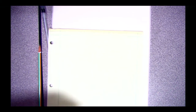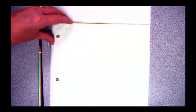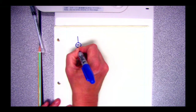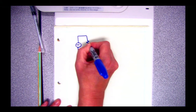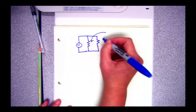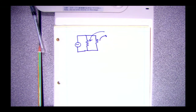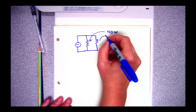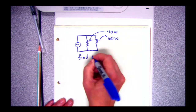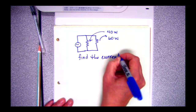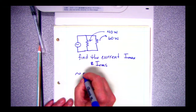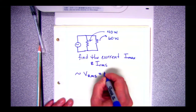These work very similar to the previous problems, except now we have to worry about RMS versus max values. So now I'm going to give us a circuit — an AC circuit with two resistors, but this time we're not giving resistor values; we're giving them as wattage values like a light bulb. So this would be like a 40-watt light bulb and this a 60-watt light bulb. We want to find Imax and IRMS, and our voltage RMS is equal to 120 volts.